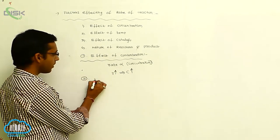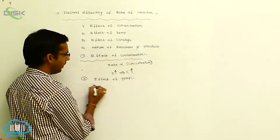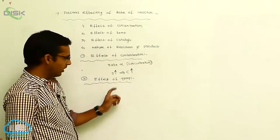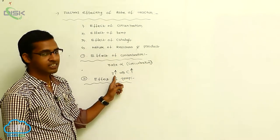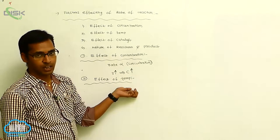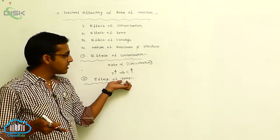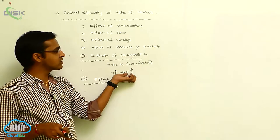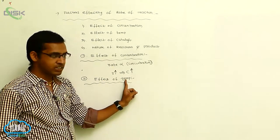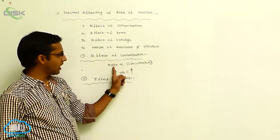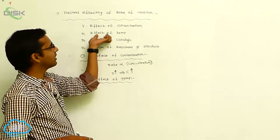The second factor is effect of temperature. When temperature increases, the rate of reaction increases, because the kinetic energy of molecules increases. By increasing temperature, kinetic energy increases and indirectly concentration also increases. So the effect of concentration and effect of temperature are both direct relations — as rate of reaction increases, concentration and temperature also increase.